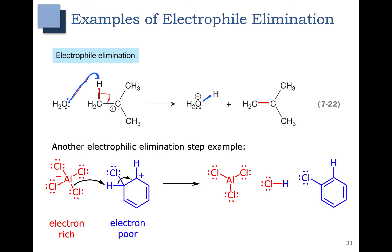Here's another example of electrophilic elimination. In this case our electron-rich species is AlCl4 minus — the negative charge is on the aluminum. The aluminum-chlorine bond, colored in green, becomes the hydrogen-chlorine bond, and the hydrogen-carbon bond then becomes a pi bond. So the green electrons over here become the green electrons there — the aluminum-chlorine bond becomes the hydrogen-chlorine bond, and the hydrogen-carbon bond becomes a pi bond. This is an electrophile elimination because we are forming an electrophilic species HCl, which has a large delta plus on the hydrogen, and our starting material had a positive charge.